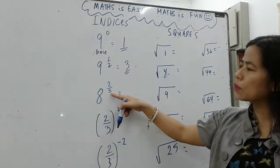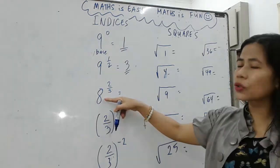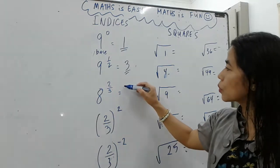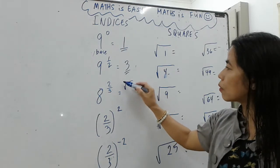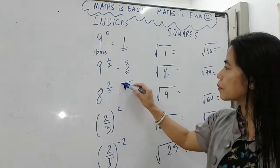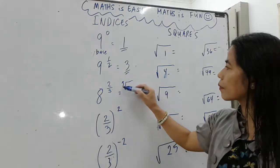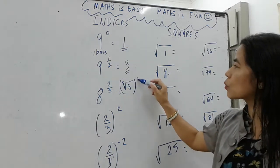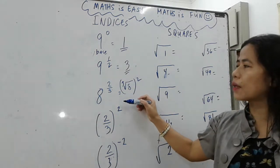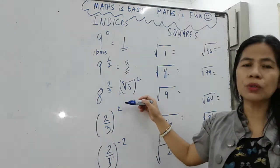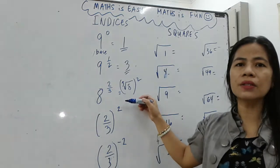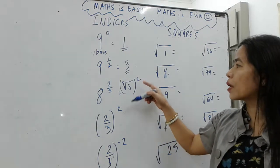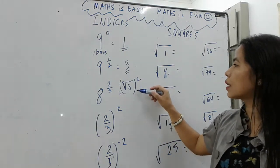The denominator is three, which means that we find the cube root of eight. Then the two means that we are going to square the result. So the cube root of eight is two, squared gives us a final answer of four.